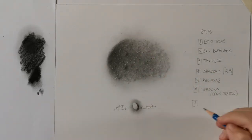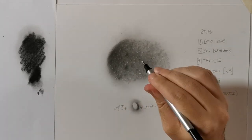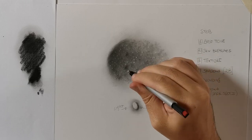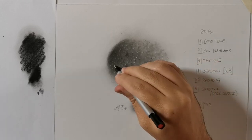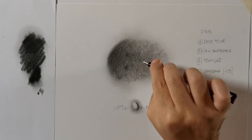Step 7: Highlights. Reinforce the highlights. If darker tones get lighter with blending, the lighter tones get darker. That means you must reinforce the highlights. I use a Tombow Mono Zero to bring back a few light spots.